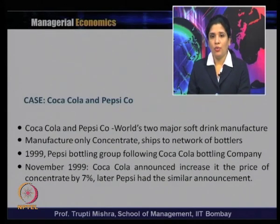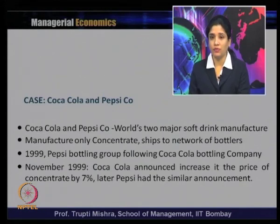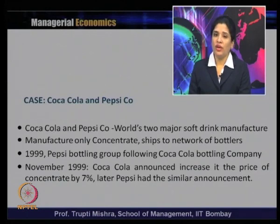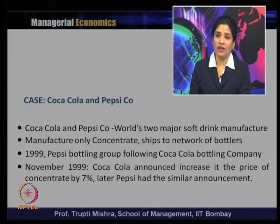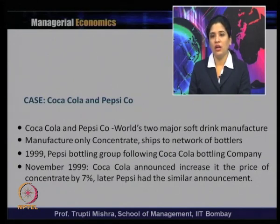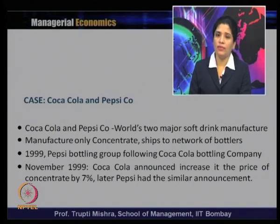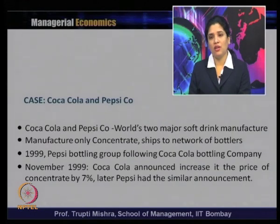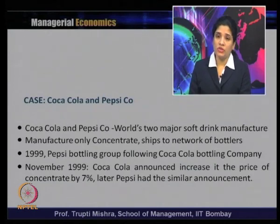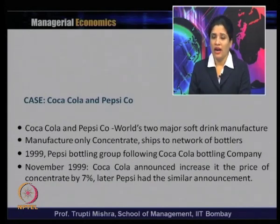To understand how managerial decision problems arise in day-to-day activities, consider Coca-Cola and Pepsi, the two major soft drink manufacturers in the world. They manufacture only concentrate and shift it to a network of bottlers who produce the final bottled drink. In 1999, Coca-Cola announced a 7 percent increase in the price of concentrate, and the Pepsi bottling group followed. Pepsi had also previously followed Coca-Cola's decision to separate its manufacturing from its bottling company.